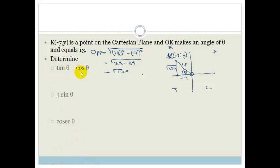Now it says determine tan θ - cos θ. So again, remember we need SOH-CAH-TOA. So tan θ is opposite over adjacent. So that is going to be √120 over -7 minus cos θ, which is adjacent over hypotenuse. So that becomes -7 over 13.